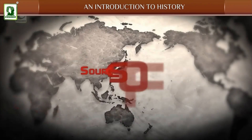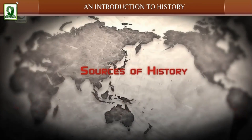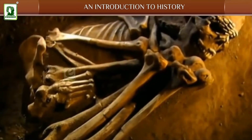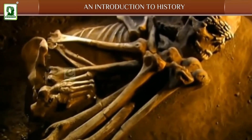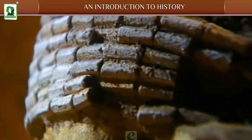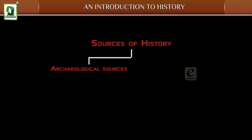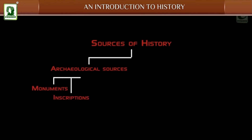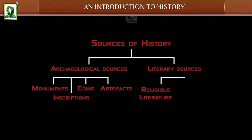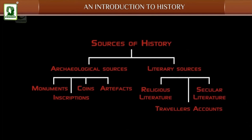Sources of History: History is based on certain records of the past, known as the sources of history. These are divided into Archaeological Sources — including monuments, inscriptions, coins, and artifacts — and Literary Sources — including religious literature, traveller's accounts, and secular literature.